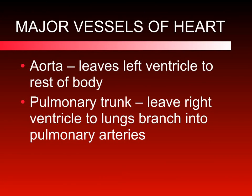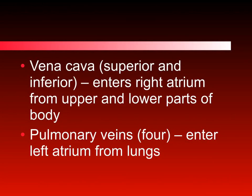The major blood vessels of the heart: the aorta is the biggest artery, pumping blood to the rest of the body — blood exits the left ventricle into the aorta, passing through the aortic semilunar valve. The pulmonary trunk sends blood to the lungs, branching into smaller pulmonary arteries, and it leaves the heart through the right ventricle, associated with the pulmonary semilunar valve. There are two vena cavas — the superior vena cava receives blood from the head and upper trunk, and the inferior vena cava receives blood from the lower half of the body.